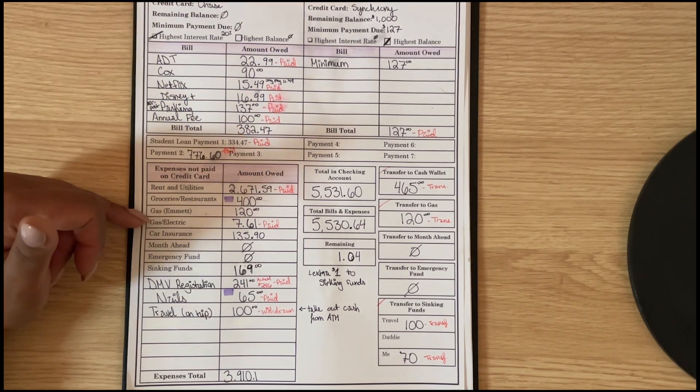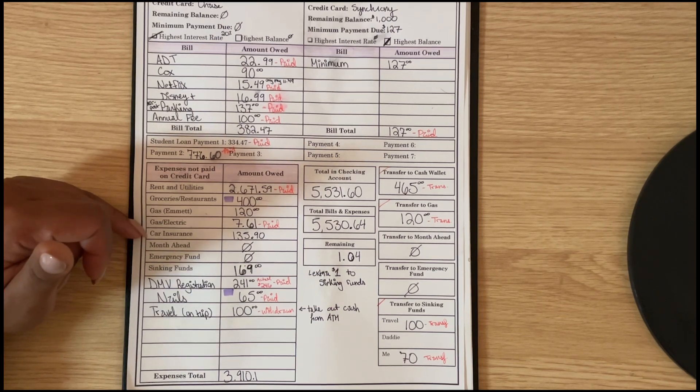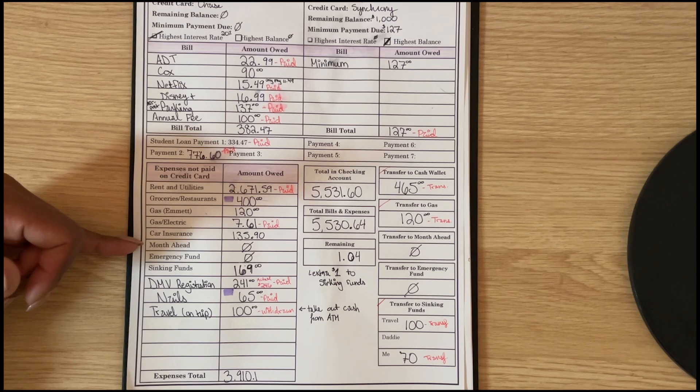With gas and electric, the gas and electric company gives us a rebate in October, so my gas is only $7.61 this month. Car insurance is $135.90.